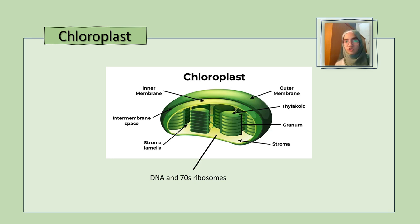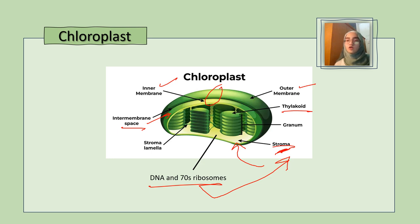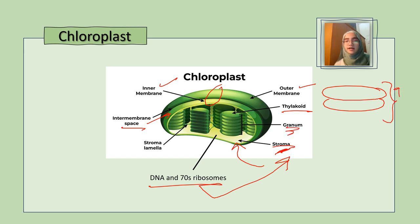Here is an overview of the structure of the chloroplast. We have the envelope, which has two membranes — the outer membrane and the inner membrane — with the inter-membrane space in between them. Inside the chloroplast is a fluid called the stroma. The stroma contains DNA and 70S ribosomes, which contribute to protein synthesis and produce enzymes and proteins required for photosynthesis. Also in the stroma are thylakoids, which are fluid-filled sacs. When stacked on top of each other, they form a granum; the plural is grana. Connecting those grana are stroma lamellae.